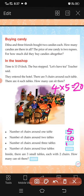Number of chairs around three tables: fifteen. Number of chairs around four tables: of course, twenty.